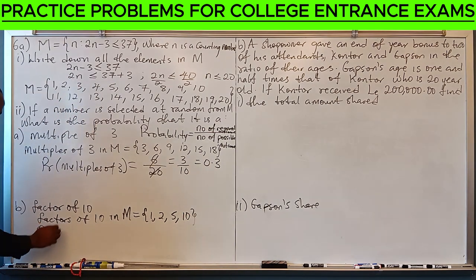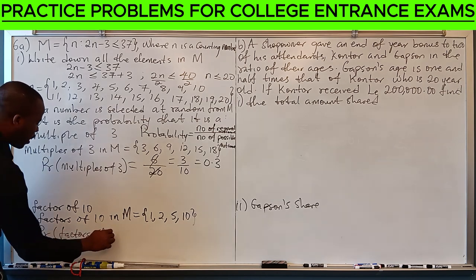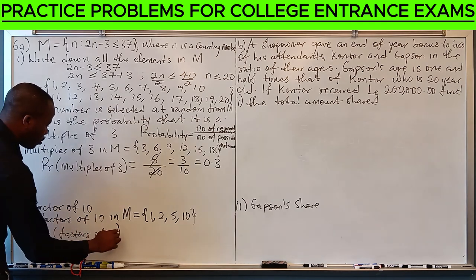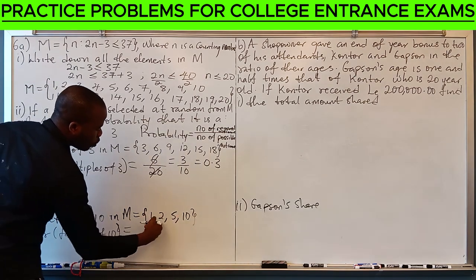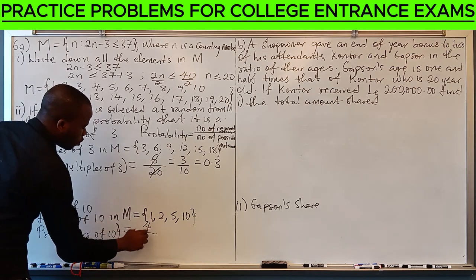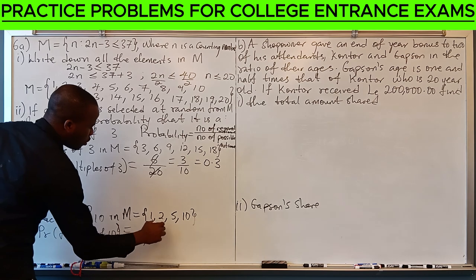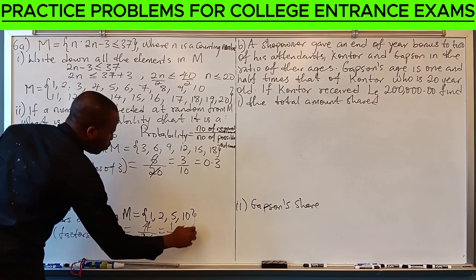And probability of factors of 10 will be... The required outcome is 4, and the possible outcome is 20. This is 1 over 5, which is 0.2.